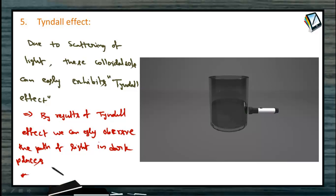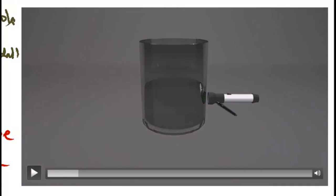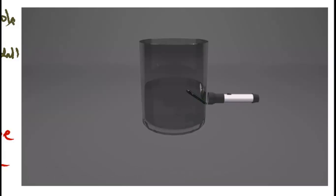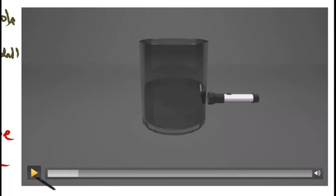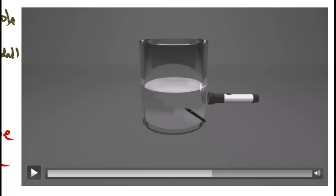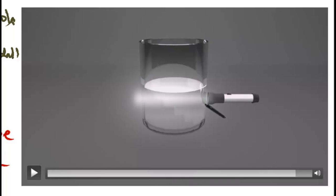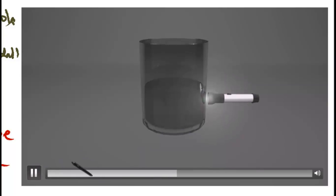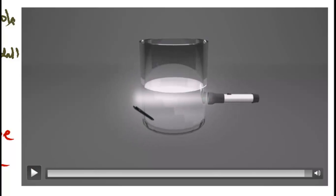The Tyndall effect can be seen in this picture. This is a true solution, with colloidal particle size less than one nanometer. When light passes through this true solution, it does not show any visible path because the true particle sizes are very small compared to the wavelength of light. But when light passes through the colloidal solution, whose particle size is comparable to the wavelength of light, the light is scattered and you can clearly see the path of the light through the colloidal solution, as shown in the figure.